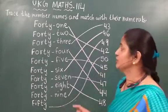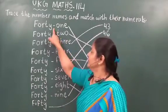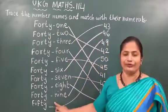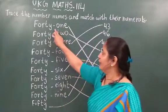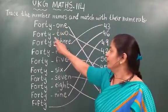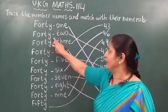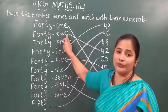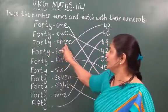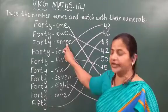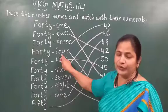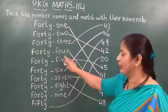Now once more I will review the spellings of 41 to 50. 41: F-O-R-T-Y O-N-E. 42: F-O-R-T-Y T-W-O. 43: F-O-R-T-Y T-H-R-E-E. 44: F-O-R-T-Y F-O-U-R.